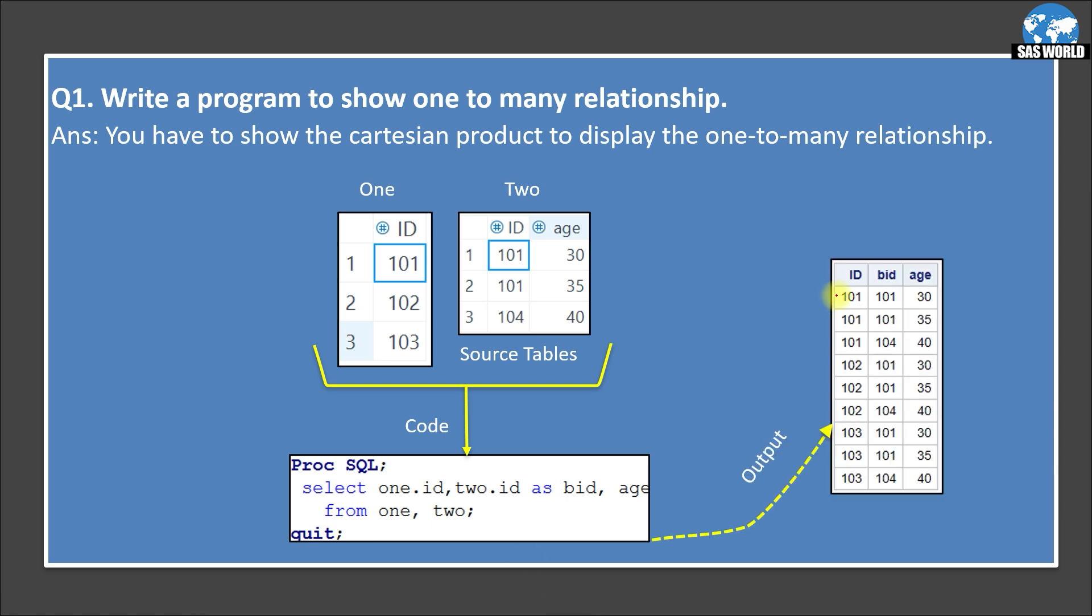all rows of the first table will combine with all the rows of second table. So you can see 101 is combining with all the rows of table2. 101, 101 and 104. And same 102 will combine with all rows of table2. 101, 101, 104.